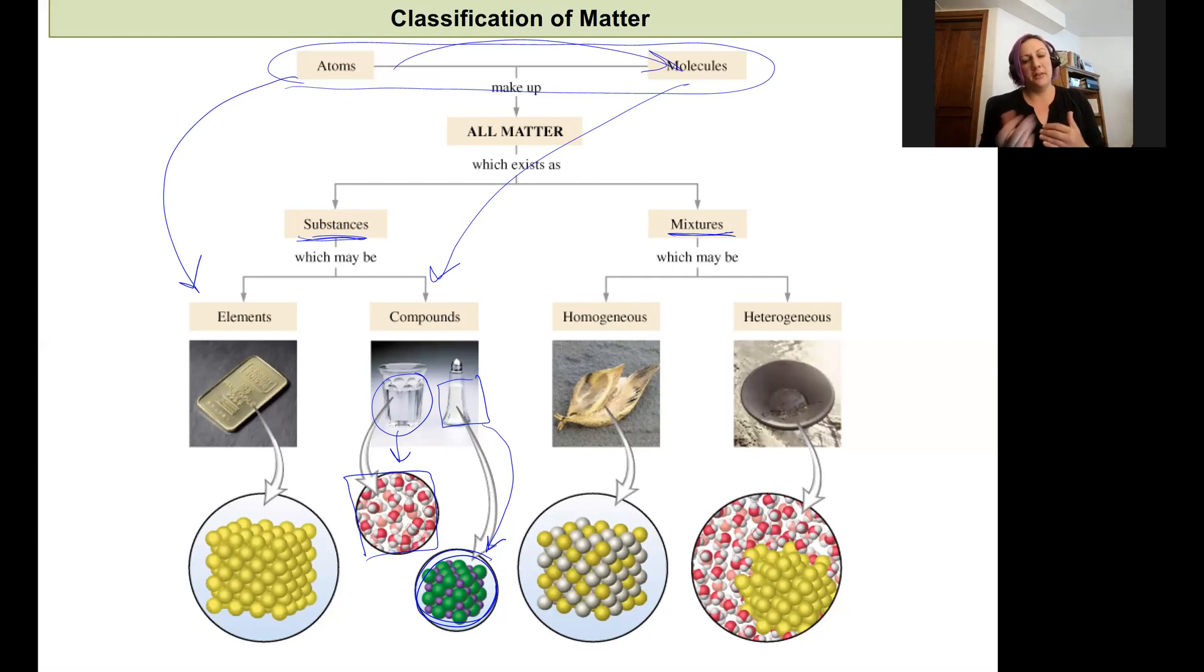On the other side, we have mixtures. Those are going to be a combination of different types of atoms or molecules. We've got two subclassifications that we consider when we think about mixtures: homogeneous and heterogeneous. Homogeneous mixtures are going to be uniform. That means the different particles that make it up, if it's different atoms or different molecules, will be evenly distributed throughout the substance.